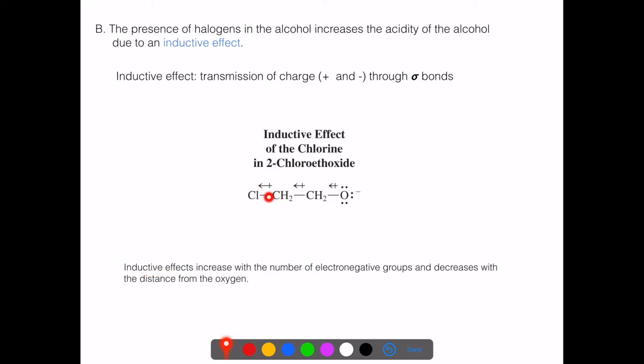You can check that on the table. The more halogens we have — for example, three fluorines — the greater the inductive effect, since there are more electronegative groups pulling electron density. Also, the distance from the oxygen atom influences this: the closer the electronegative group, the greater its impact. These are shown as dipole arrows pointing from the positive end toward the more negative end. Overall, the inductive effect helps increase the acidity of alcohols.